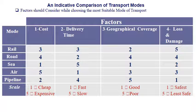According to cost, sea is the cheapest, then pipeline, then rail, then road, and the most expensive is air. For delivery time, air is fastest, then road, then rail, then pipeline, and the slowest is sea.